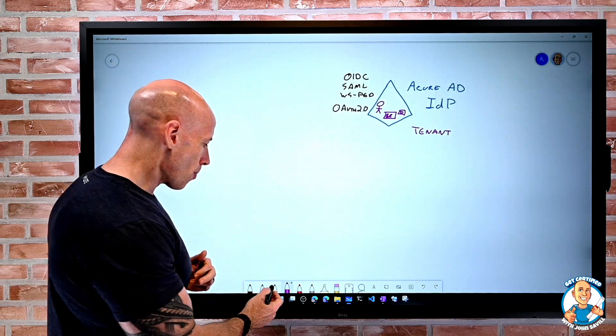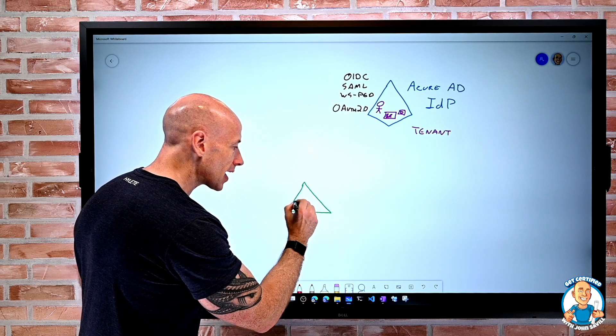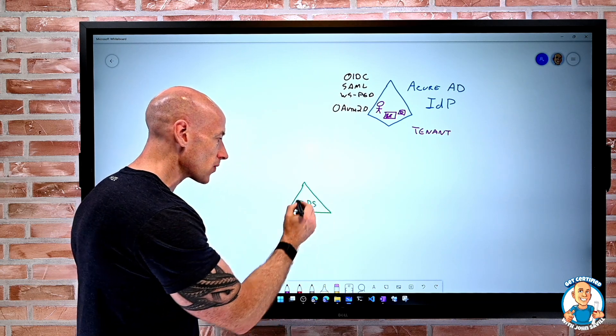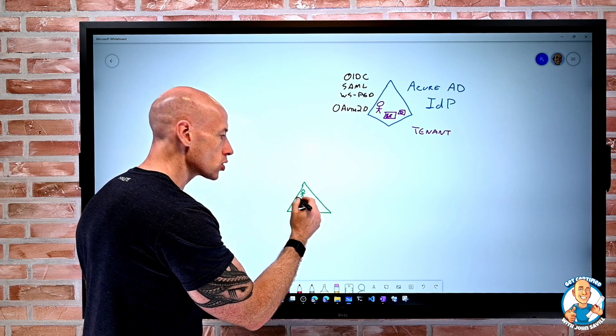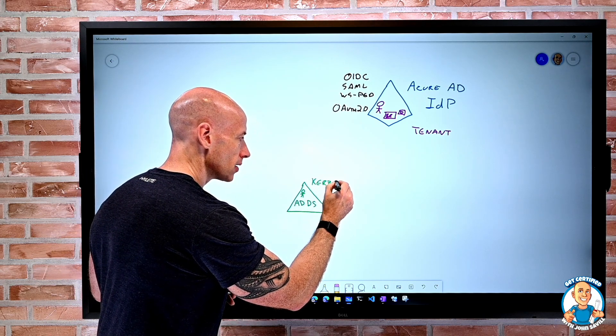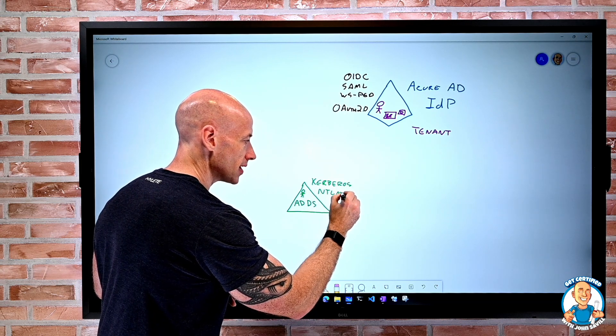If we think about on-premises, we have a regular Active Directory Domain Services environment where we have our users, groups, and machines joining. This speaks things like Kerberos and NTLM for authentication.